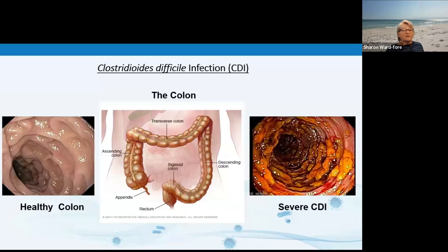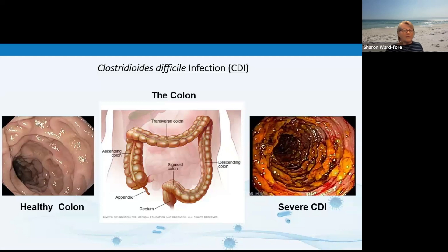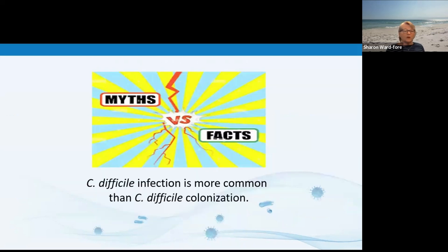Symptoms of severe CDI include watery diarrhea as often as 10 to 15 times a day, severe belly cramping and pain, dehydration, swollen belly, kidney failure, sepsis, and toxic megacolon — when the colon becomes inflamed and sometimes forms patches of raw tissue that can bleed or produce pus. Rarely, it can cause death. Fortunately, toxic megacolon and sepsis aren't common with CDI.